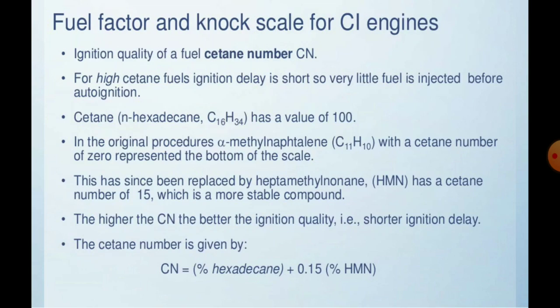We can also consider the fuel factors of the knocking scale for CI engines. Knocking phenomena exist in almost all engine types. In CI engines, high cetane number fuels have a short ignition delay, so very little fuel is injected before auto-ignition. The cetane number scale has a value of 100 at the top of the original procedure, and a certain compound with cetane number zero was represented at the bottom. This has since been replaced by cetane number 15, which is a more stable compound.